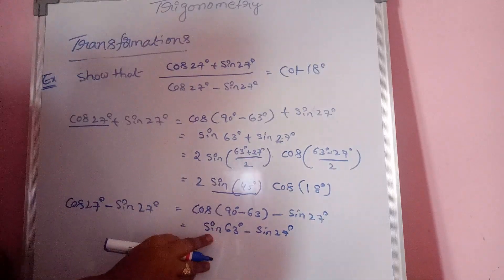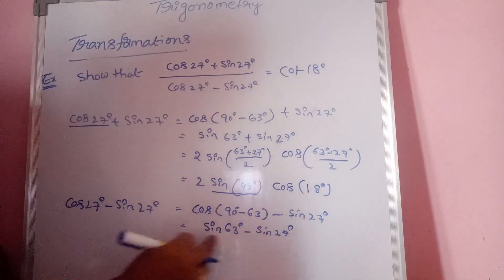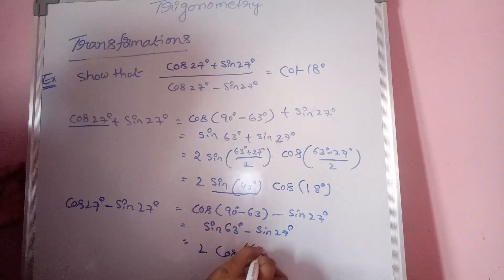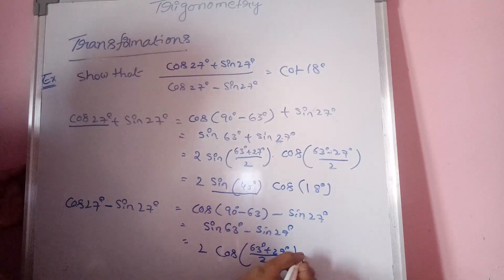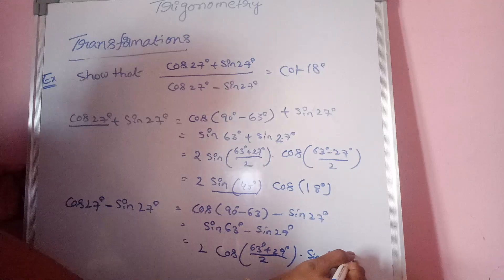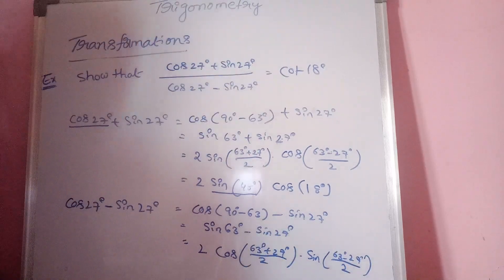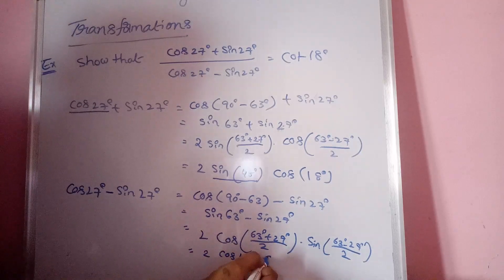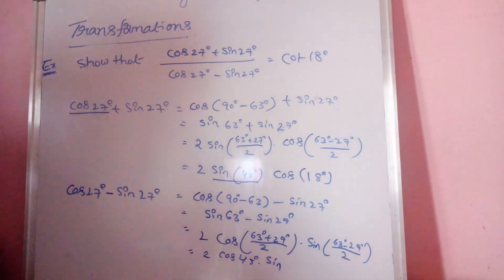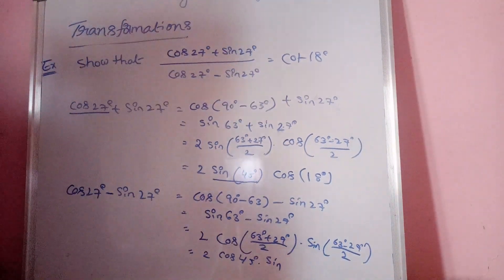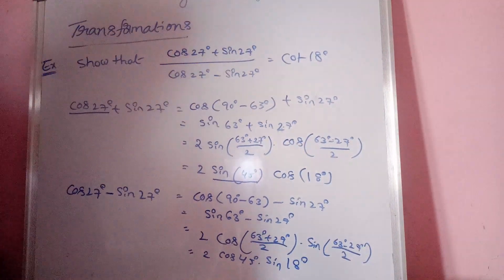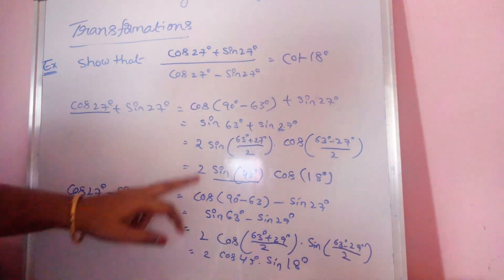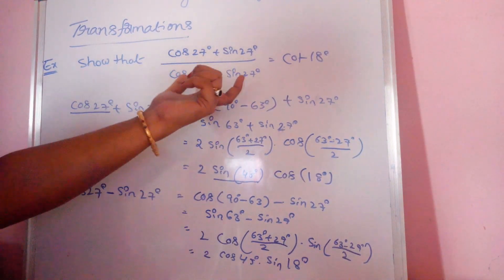Using sin C minus sin D equals 2 cos((C+D)/2) sin((C−D)/2): this gives 2 cos 45° sin 18°. So sin 45° equals 1/√2 and cos 45° equals 1/√2. We now substitute these values to evaluate the full expression.